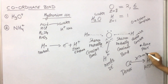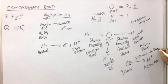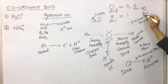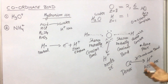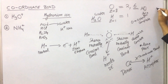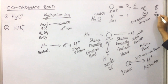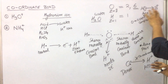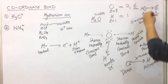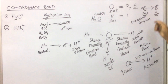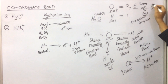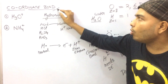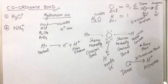Such a bond in which both electrons of the sharing are contributed only by one atom is called a coordinate bond. In a covalent bond, one electron is contributed by each atom. But here, oxygen gives both electrons of the sharing — so this is not a mutual sharing bond. This is a coordinate bond. The arrow always points from the donor atom towards the acceptor atom.